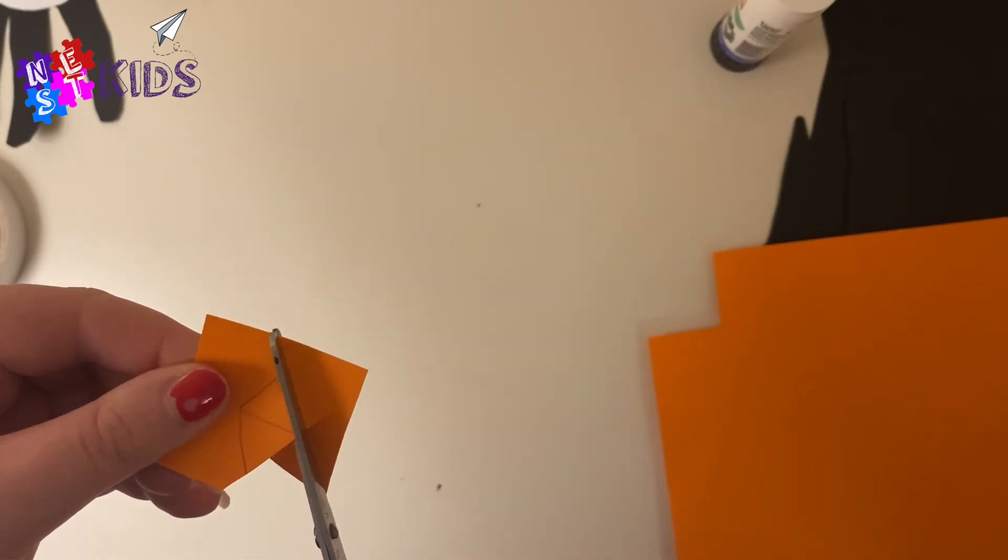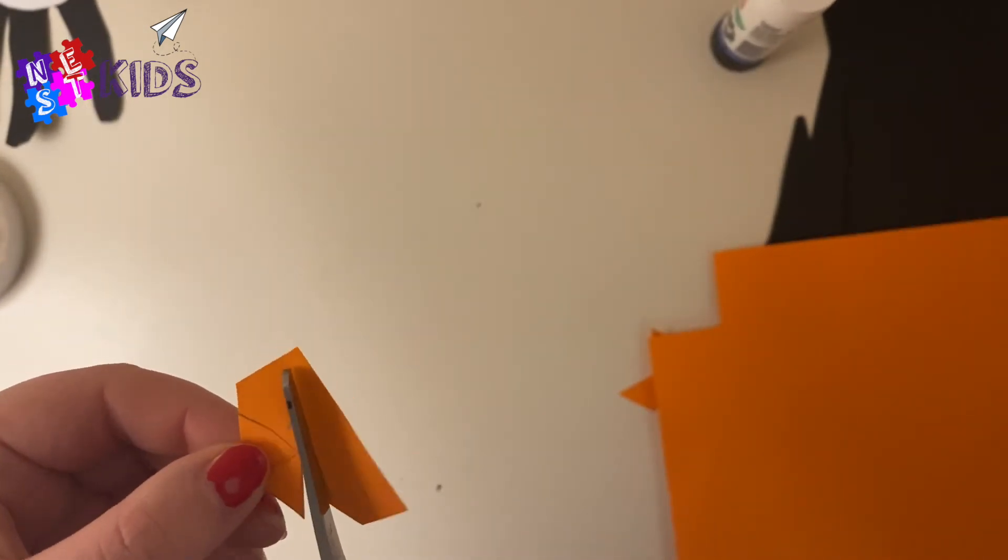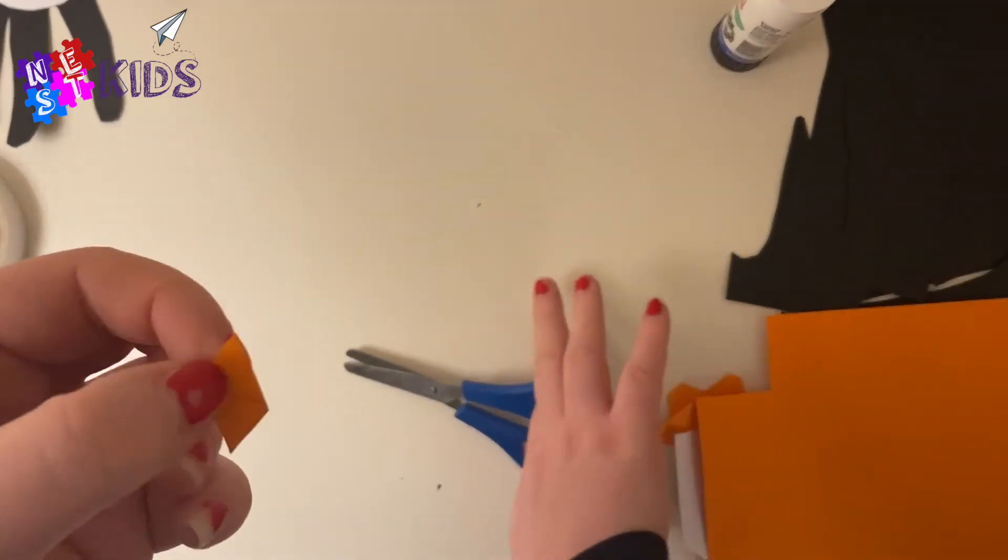Remember to cut out safely. Once you've cut that out, I'll show you what to do next, but it's going to be the mouth. Here I am cutting the diamond shape out.